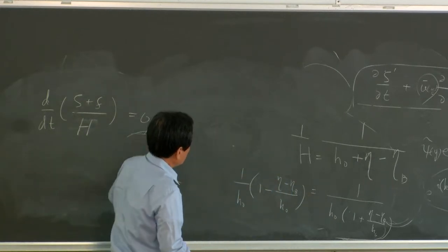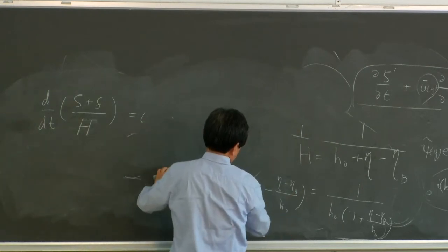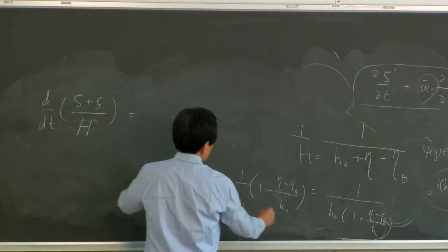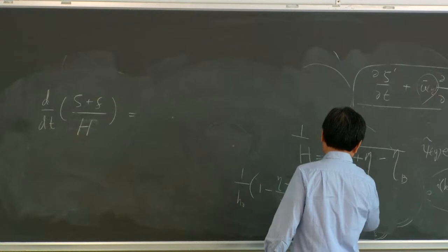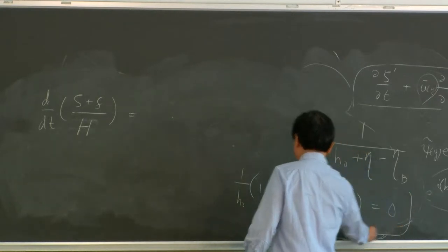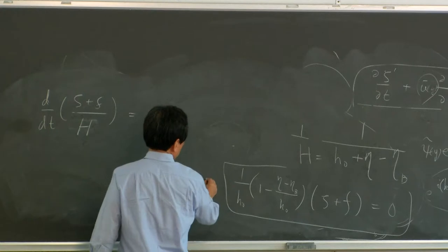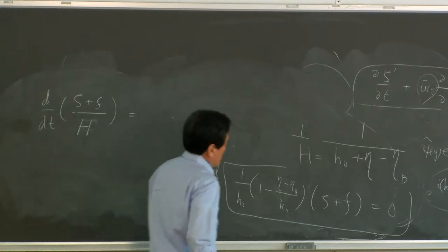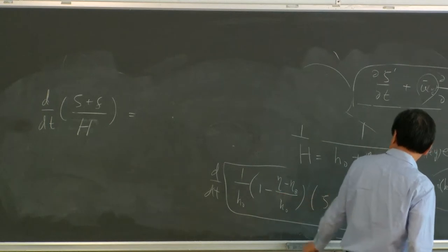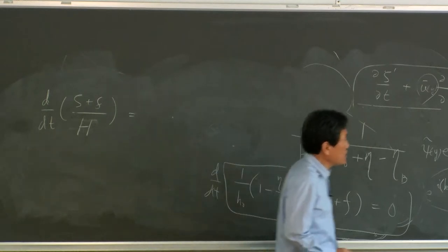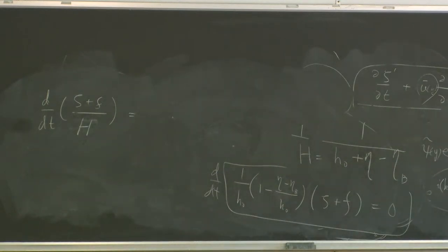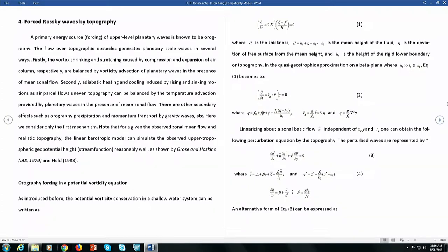Multiplying through, the potential vorticity equation becomes: d/dt(ζ + f) = 0, the same equations as before. Using this, the height variations will create vorticity. The full expression involves f₀ + βy terms.